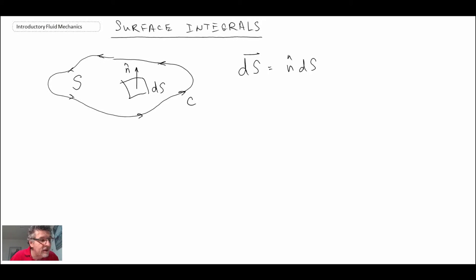So in fluid mechanics, we can have a number of different surface integrals. We can be doing surface integrals with scalars or with vectors, so we'll take a look at those here. And whenever you're doing a surface integral, quite often it will be denoted with a two-integral sign to denote the fact that you're integrating over a surface.